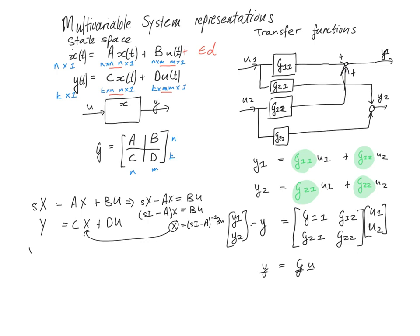We can simply write that last equation is equal to C times sI minus A inverse times BU, and we still have our plus DU, and then obviously we can just collect all of those things and find our transfer function fully. So that's C times sI minus A inverse times B plus D. So that's the transfer function that relates, and that would be G, is equal to GU.